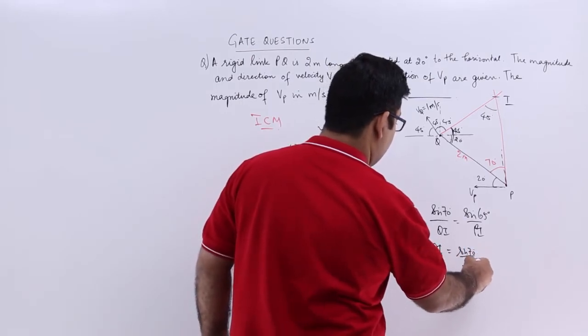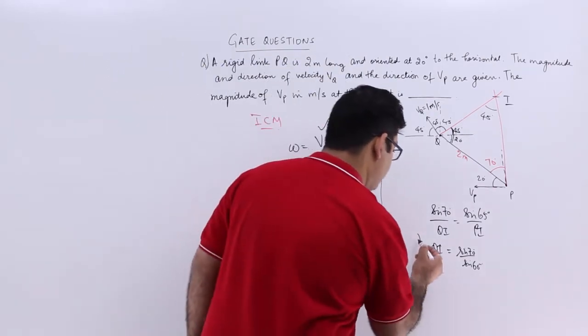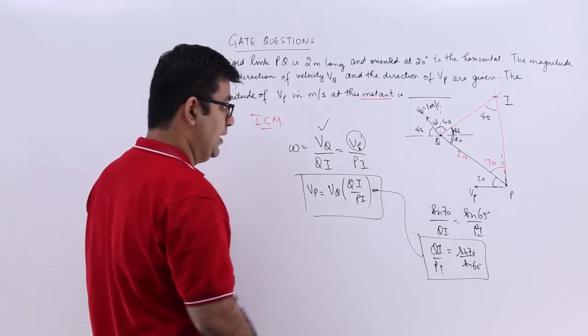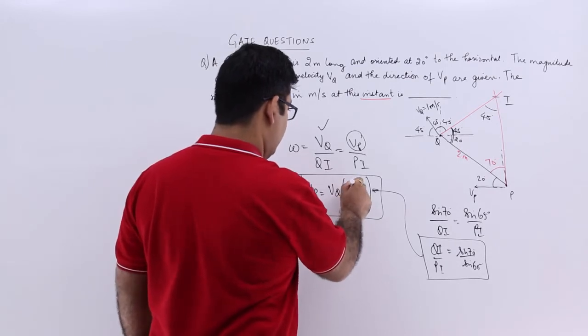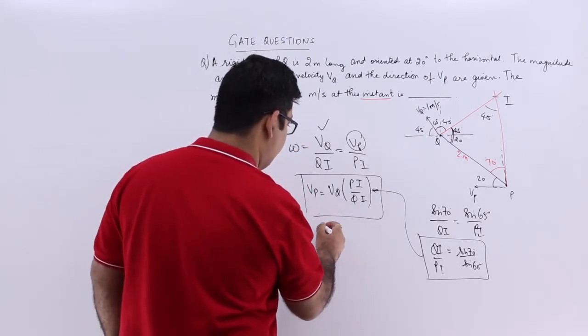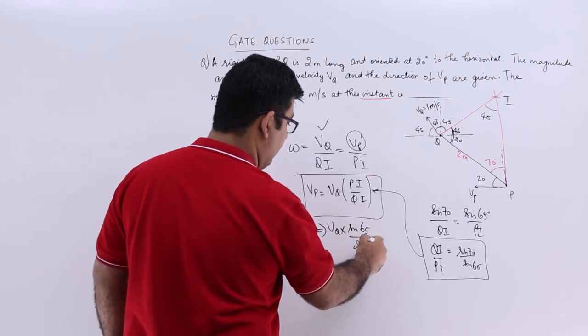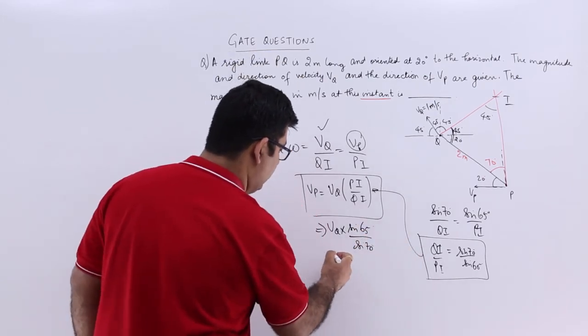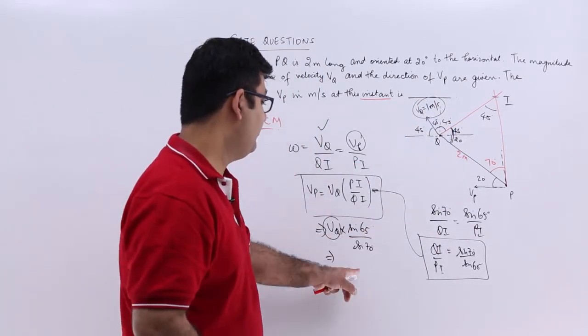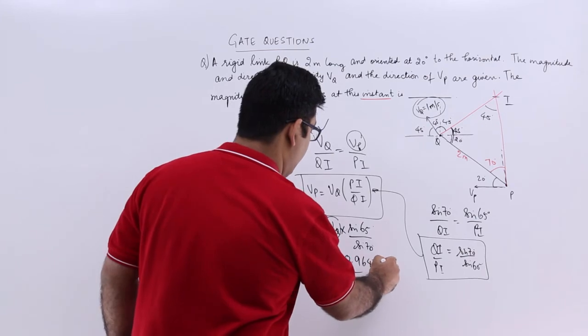You can directly substitute this into the particular equation. This would be vq into sine 65 by sine 70. The reciprocal gives you this. Since vq is 1, you just need to find sine 65 by sine 70, which is roughly 0.9645 meters per second.